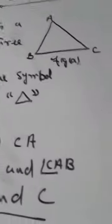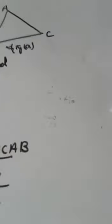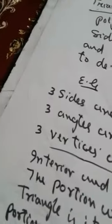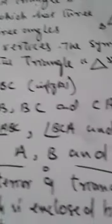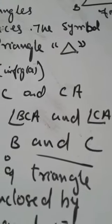Side AB, BC, and CA. Three angles: angle ABC, angle BCA, and angle CAB. Three vertices are A, B, and C. These are line segments.